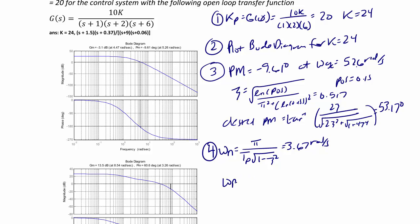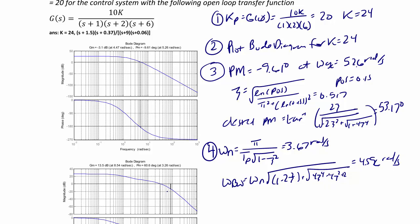The bandwidth frequency equals omega-n times the square root of the quantity 1 minus zeta squared plus the square root of 4 zeta to the fourth power minus 4 zeta squared plus 2. So the bandwidth equals 4.596 radians per second. The new phase margin frequency equals 0.8 times the bandwidth, which equals 3.676 radians per second.